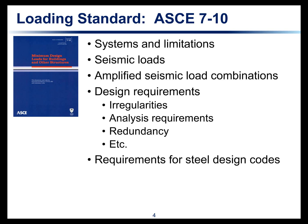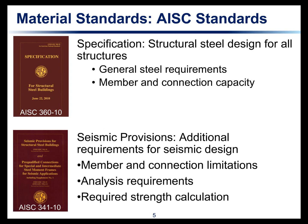There are also other design requirements, like checking for irregularities and how that affects the design of the rest of the structure. Analysis requirements address whether you need a dynamic analysis or can use a regular static analysis with the equivalent lateral force procedure, as well as how to calculate your redundancy factors — all in ASCE 7-10. For this example, we're going to the 2010 versions of AISC 360, which is the main specification, and AISC 341, which are the seismic provisions. The main specification applies to all structural steel buildings and covers general steel requirements and member and connection capacity. The seismic provisions are an additional, over-and-above requirement on top of the specification.